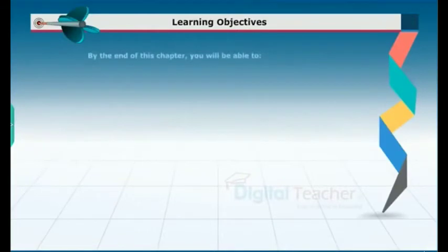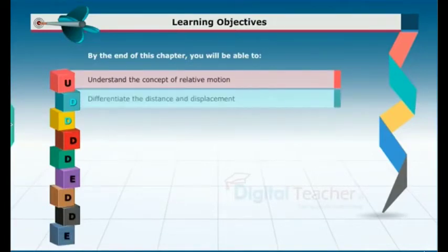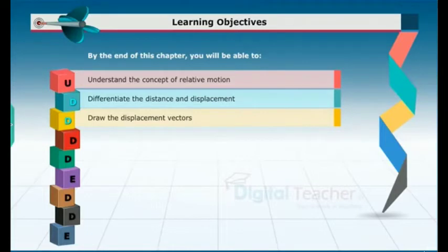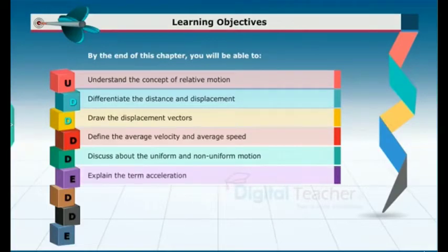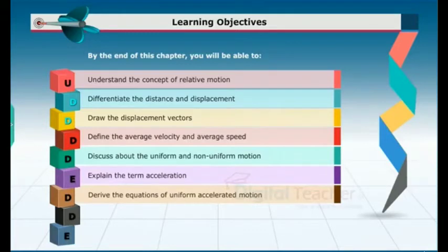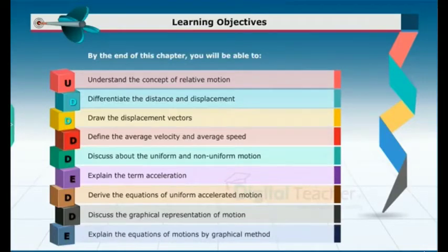Learning Objectives: By the end of this chapter, you will be able to understand the concept of relative motion, differentiate distance and displacement, draw displacement vectors, define average velocity and average speed, discuss uniform and non-uniform motion, explain acceleration, derive equations of uniform accelerated motion, discuss graphical representation of motion, and explain equations of motion by graphical method.